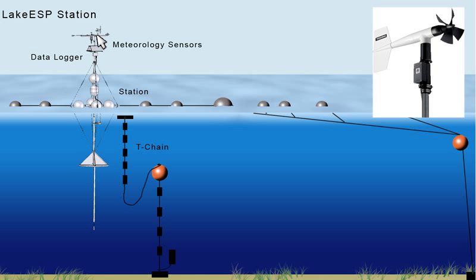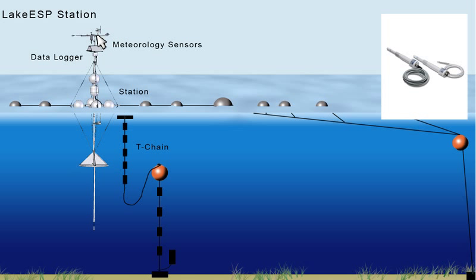The RM Young 05105 Wind Monitor is a mechanical sensor that measures wind speed and direction. This sensor has an analog output and can be directly connected to Lake ESP.